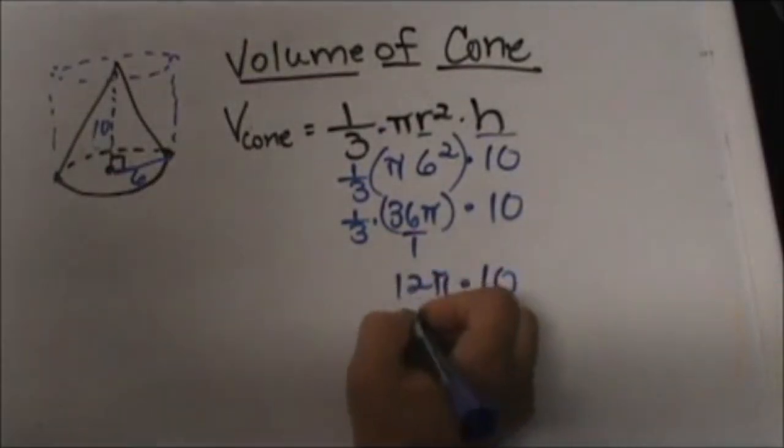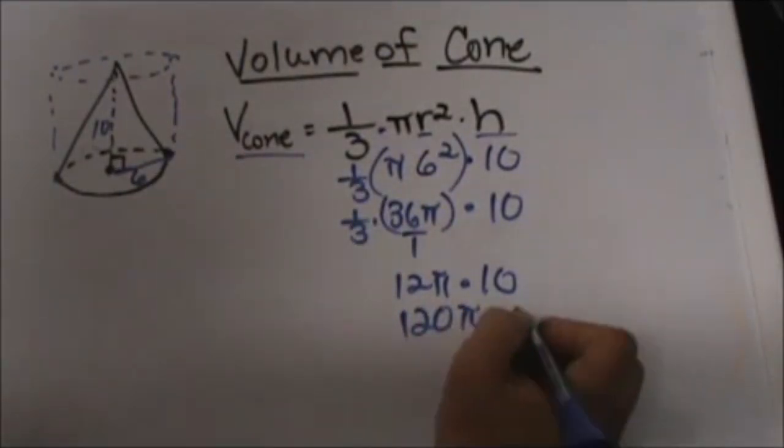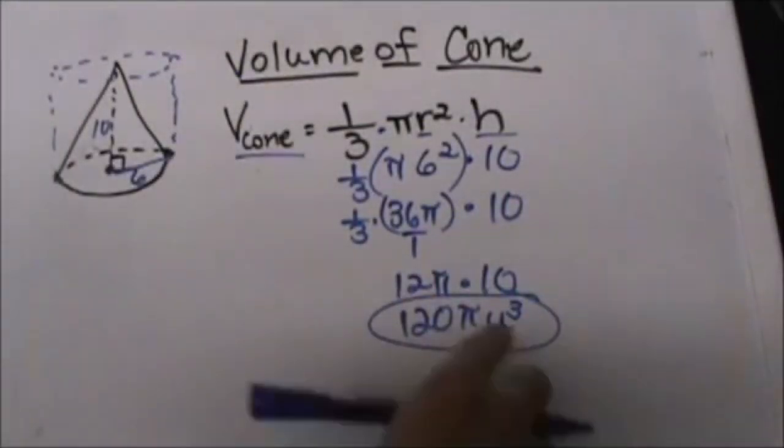So this simplifies down to 120 pi and this is volume and volume is three dimensional so that is going to be units cubed. So whatever your unit measure is you cube it.